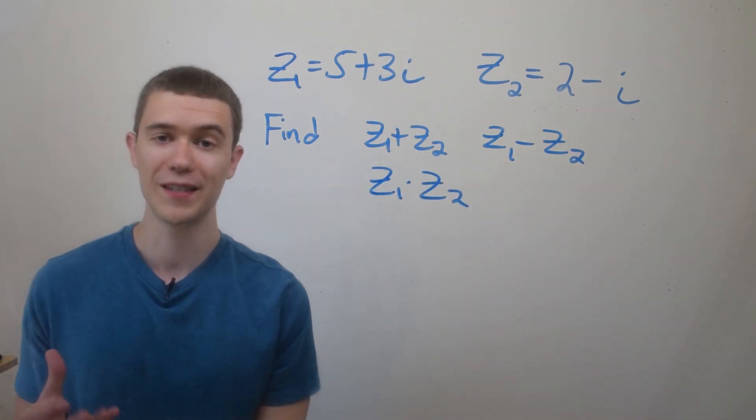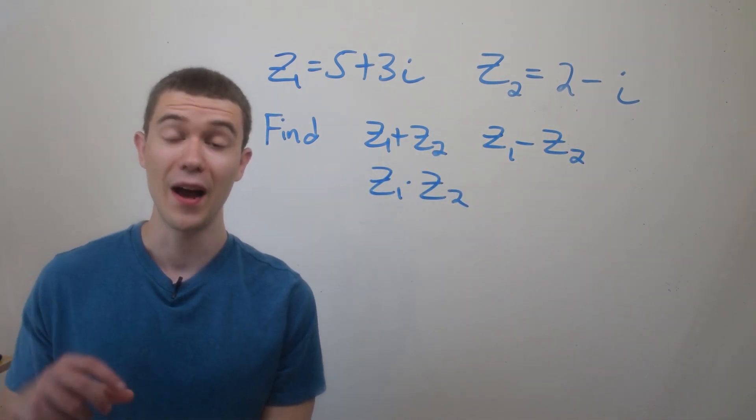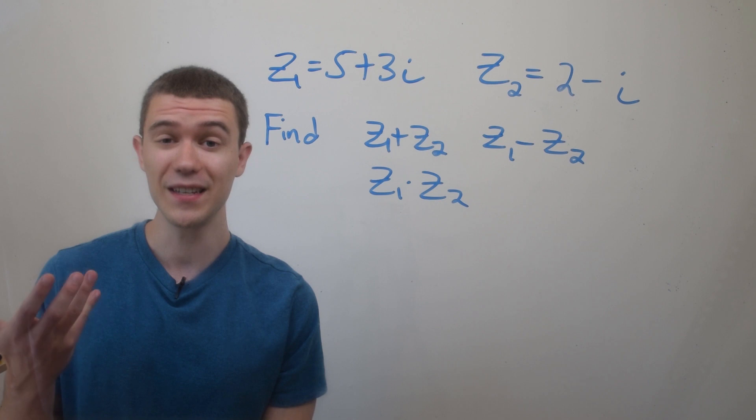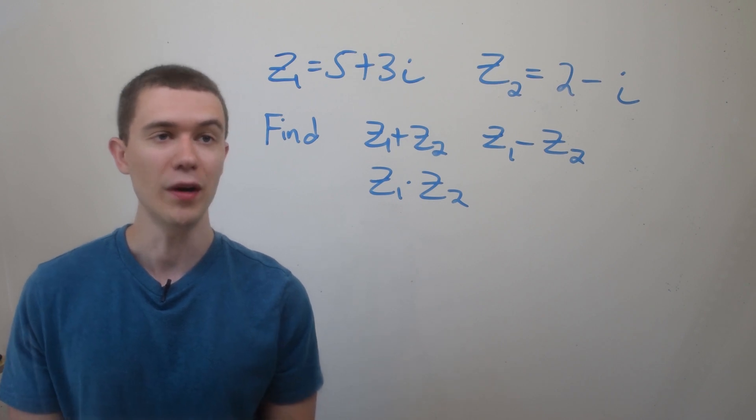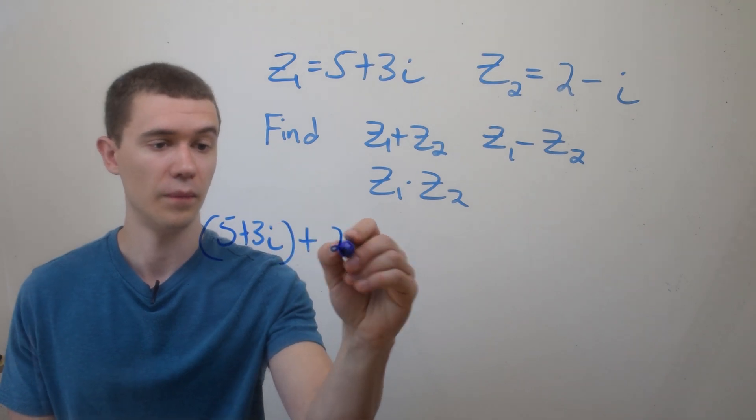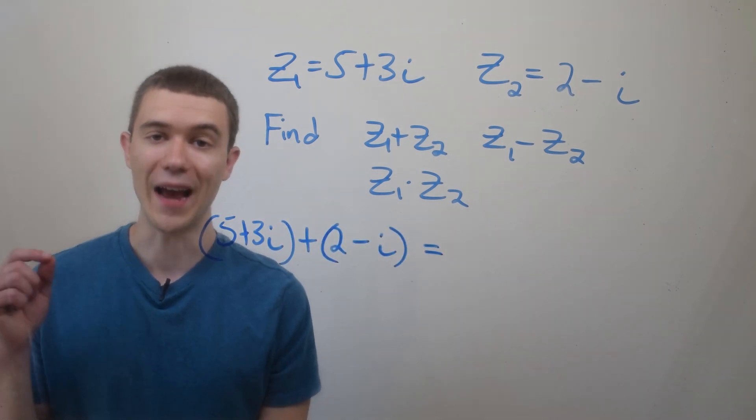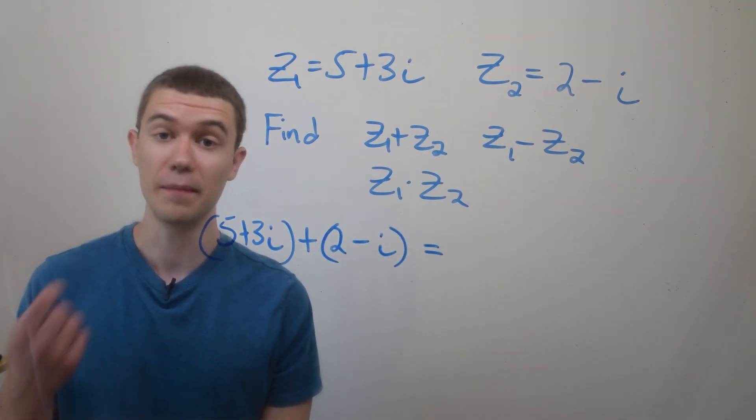So here I have two complex numbers, z1 and z2, and I want to add them, subtract them, and multiply them. So how do I do that? Well, I basically do it in the same way you would do real addition, subtraction, and multiplication. So if I want to add two complex numbers, I simply add the real parts, and I add the imaginary parts.